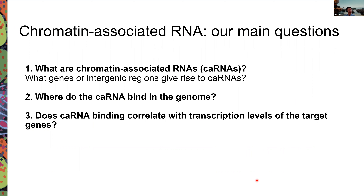Our main questions when we started investigating this type of RNA were: first, what are the chromatin-associated RNAs — what genes or intergenic sequences give rise to these CA-RNAs? Second, what do the CA-RNAs bind in the genome — where are the genomic binding sites of each chromatin-associated RNA? Third, do any of the binding sites correlate with transcription levels of the target genes?